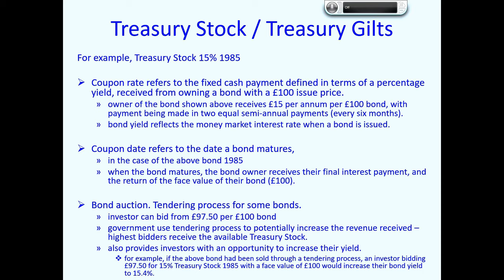A tendering process provides the government with an opportunity to increase the revenue they receive, because the highest bidders receive the available stock. However, this auction also provides investors with an opportunity to increase their yield. For example, an investor bidding £97.50 for 15% treasury stock 1985 with a face value of £100 would increase their bond yield from 15% to 15.4%.